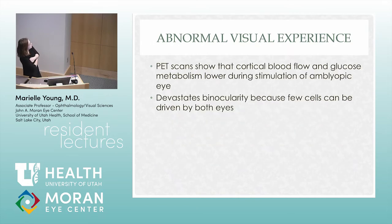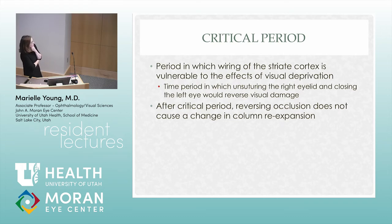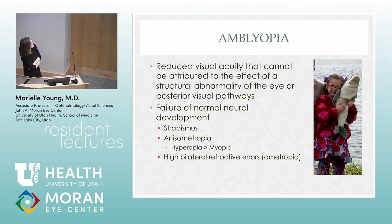The only way to fix amblyopia is to force the brain to work by patching or penalizing the good eye. Binocularity is not as good in kids with amblyopia because the binocular centers in the lateral geniculate nucleus don't form as well. The critical period is when you can actually reverse amblyopia — after that period, you cannot make the columns within the lateral geniculate nucleus re-expand. Amblyopia is reduced vision caused by a brain that hasn't learned how to see.